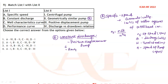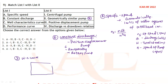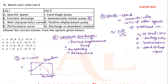The positive displacement pump includes reciprocating pumps and rotary pumps. The third item is the well characteristics curve, which shows the relationship between drawdown and discharge. The diagram shows a line representing the drawdown and dotted lines representing the discharge.